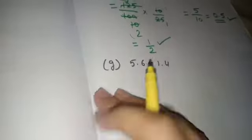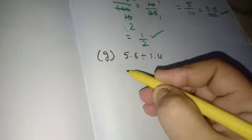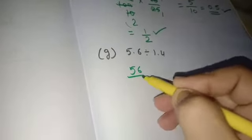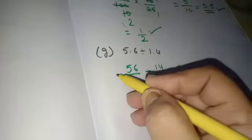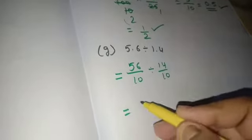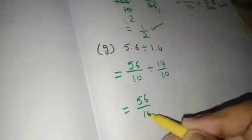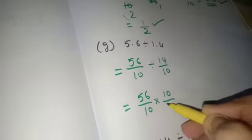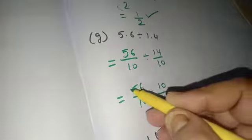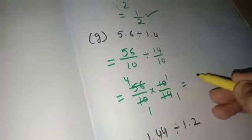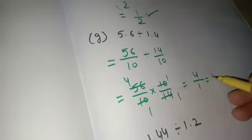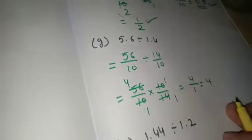Let's move to another part, G part. 5.6, decimal will be removed, 56 by 10, divides 14 by 10. Don't forget to put the sign of equals to before each step. Here, 10 by 14. Apply the table of 14. After cancellation, 4 ones are 4, 1 ones are 1. The answer is 4.